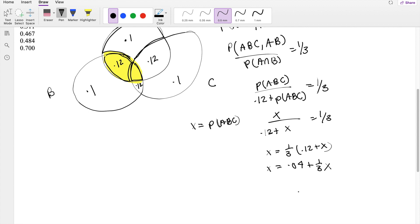This is X equals 0.12 divided by 3, which equals 0.04 plus 1/3 X. Subtracting the 1/3 X to the other side, you get 2/3 X equals 0.04, so X equals 0.06.